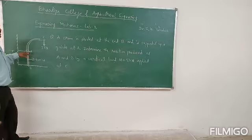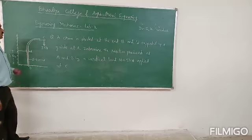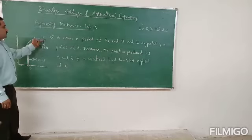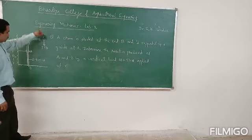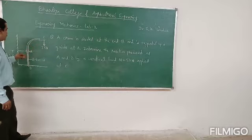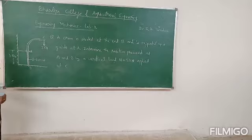We need to determine the reactions produced at A and B by a vertical load W equal to 5 kN. Here some vertical load W is applied, so this moves downward. At that time we have to find the reactions at A and B.